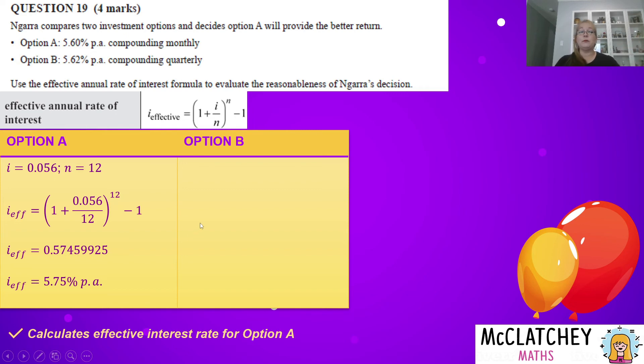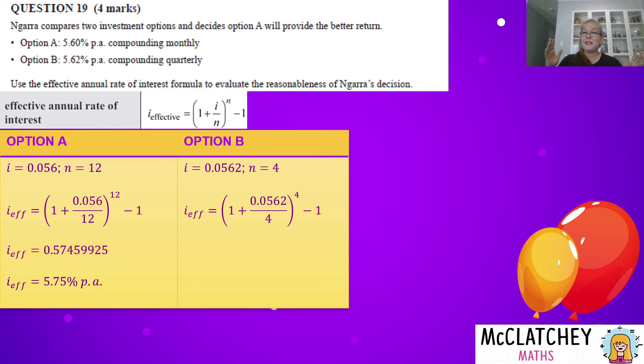Same process again for option B. So once again, I've changed my interest rate by dividing that by 100. I know that I'm going quarterly, four quarters in one year. Substitute it into the formula. I don't get a mark here because remember that mark was given for doing it into either option. So we've already got that mark over here. We've worked it out here. Times it by 100 to change it into an interest rate, 5.74 percent per annum. We get our next mark for working out the effective interest rate of option B.